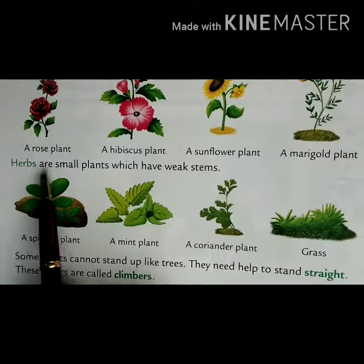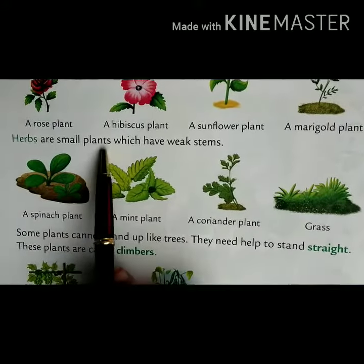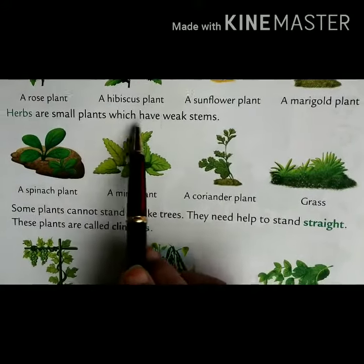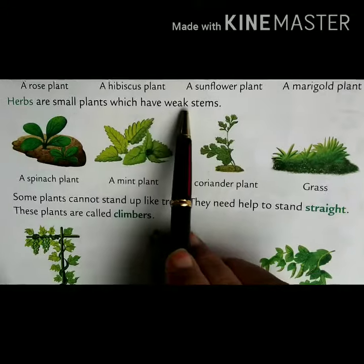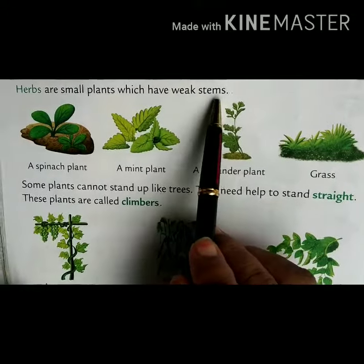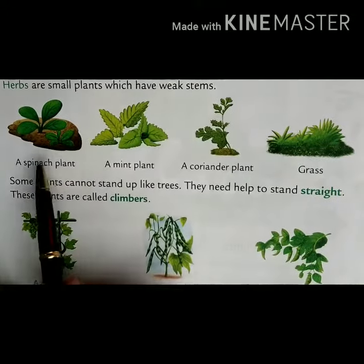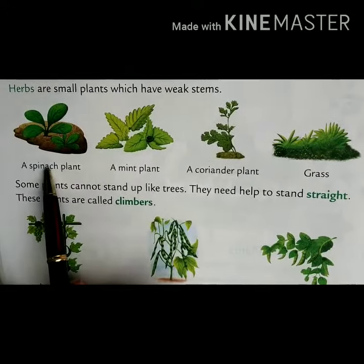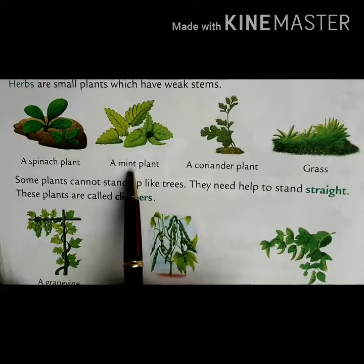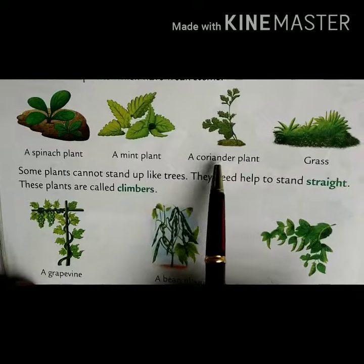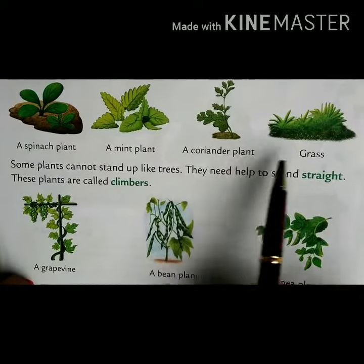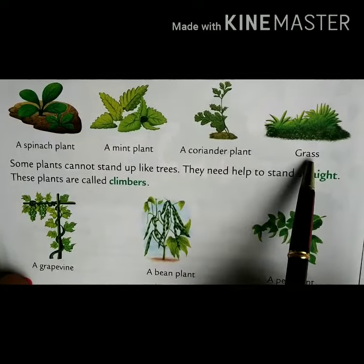Herbs are small plants which have weak stems. Examples include spinach, mint, coriander, and grass.